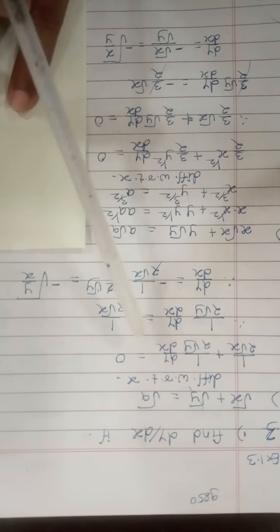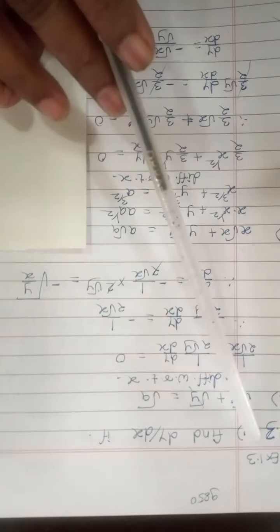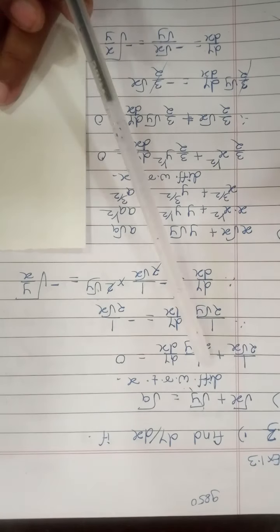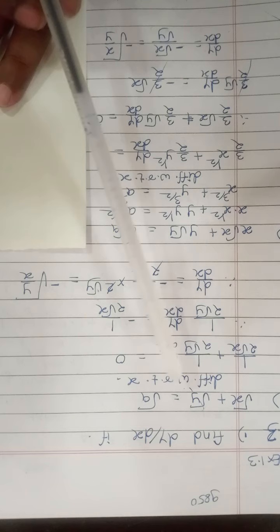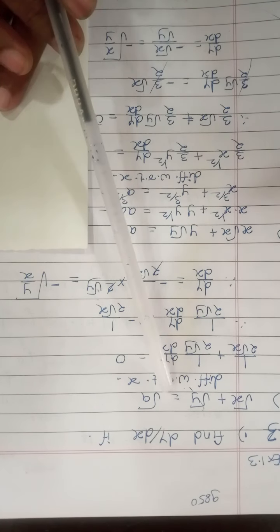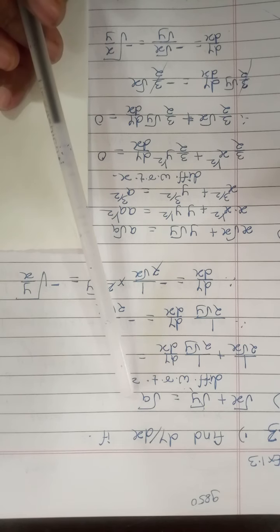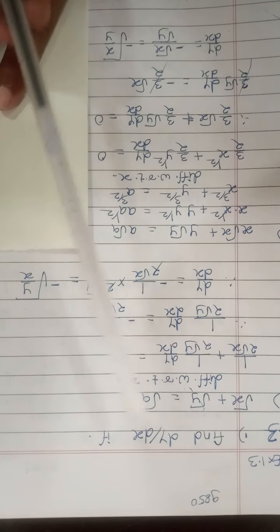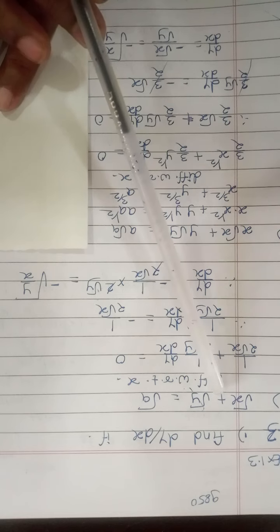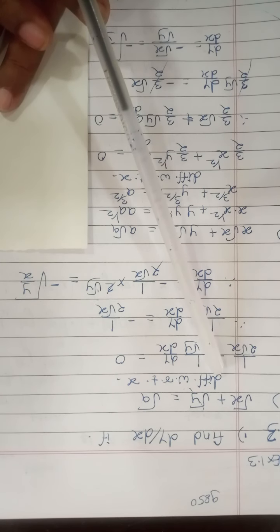Hello students. I am now going to continue with the chapter differentiation of 12th standard, Exercise 1.3, Question number 3. This question deals with examples of implicit functions, where we can't see the pattern of y = f(x) type questions — here x and y come together. We start with the first example; in question number 3 there are 10 examples.